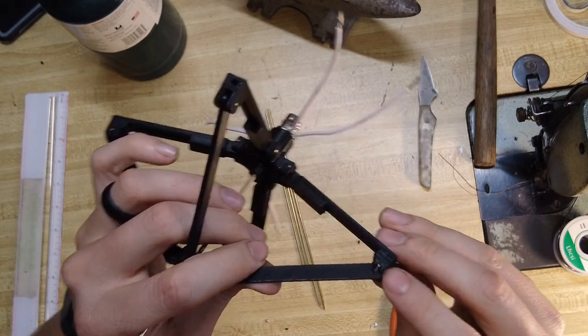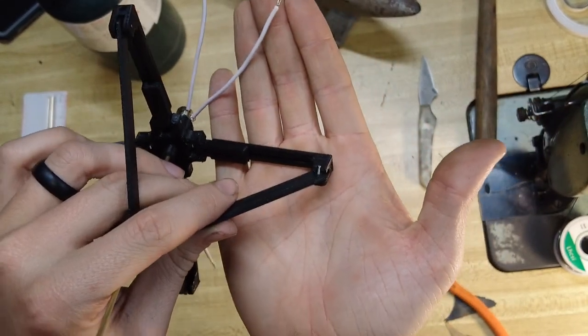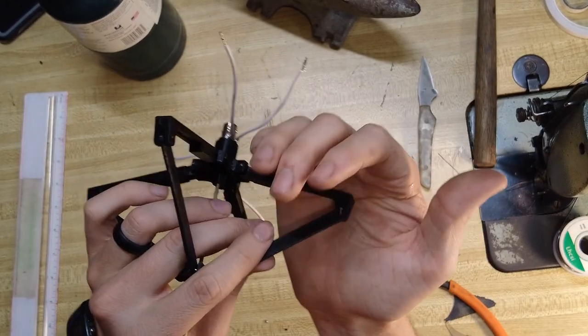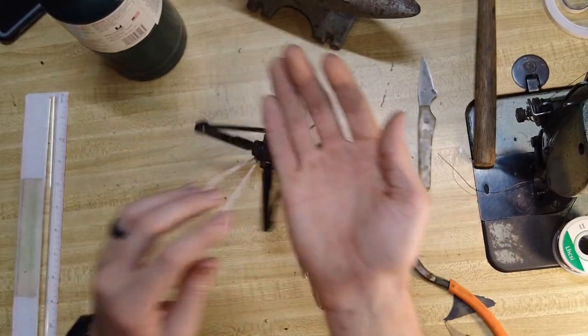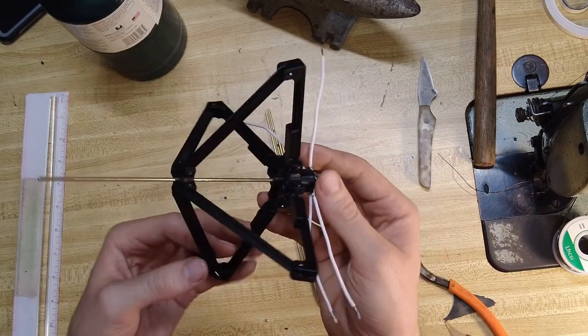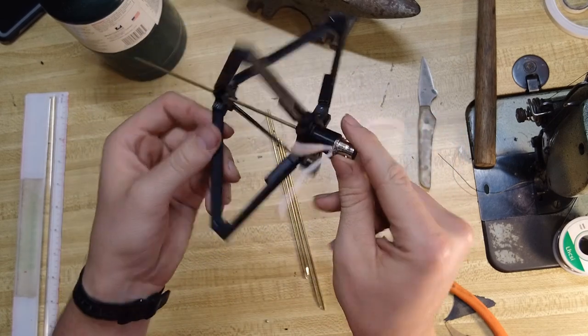As you can see I broke one off and with the other ones I remembered to print them on their sides so that would be stronger right there but on this one I forgot so I'll have to reprint these arms. But let's just take that note to print those on their side and make it a little bit stronger.